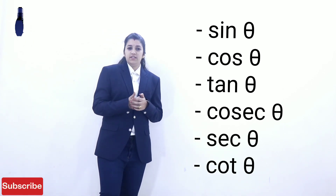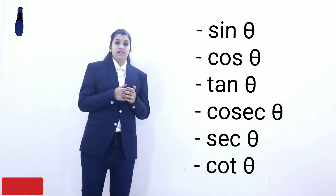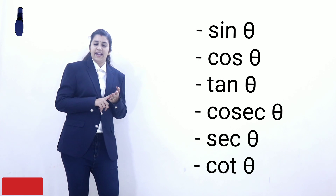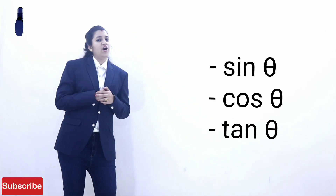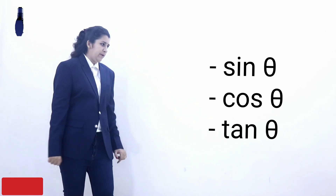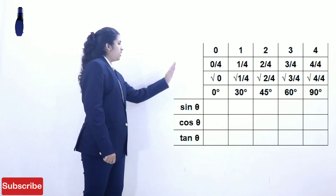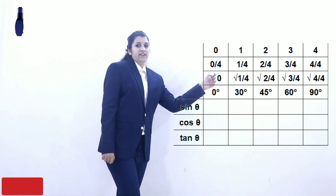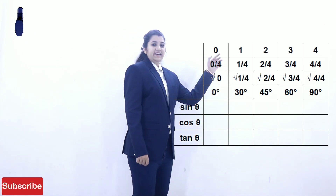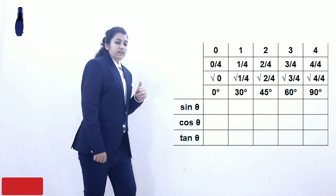We have 6 ratios as discussed in the previous lecture: sin, cos, tan, sec, cosec, cot. Now we will pay attention to only 3 ratios — sin θ, cos θ, and tan θ. We have basic angles: 0°, 30°, 45°, 60°, and 90°.